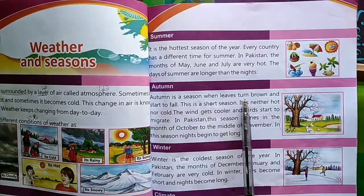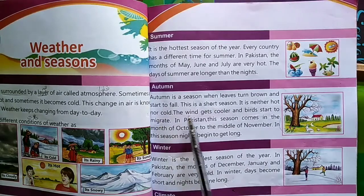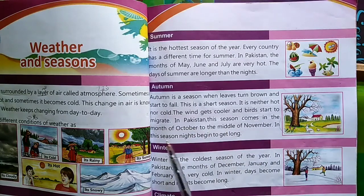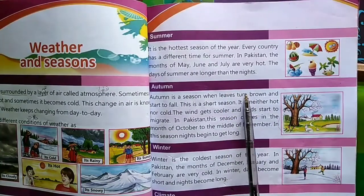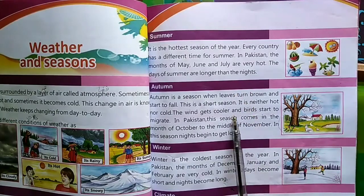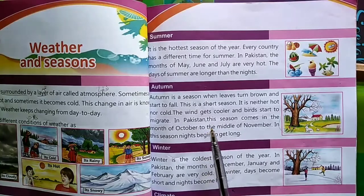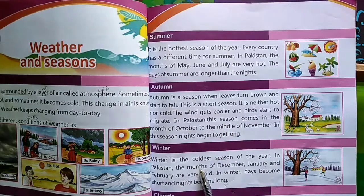The third one is autumn. Autumn is a season when leaves turn brown and start to fall. This is a short season. It is neither hot nor cold. The wind gets cooler and birds start to migrate. In Pakistan, this season comes in the month of October to the middle of November. In this season, nights begin to get long.